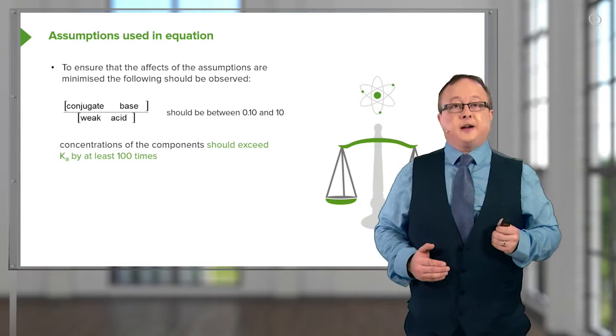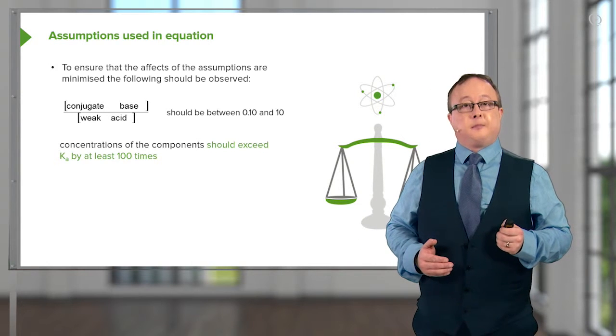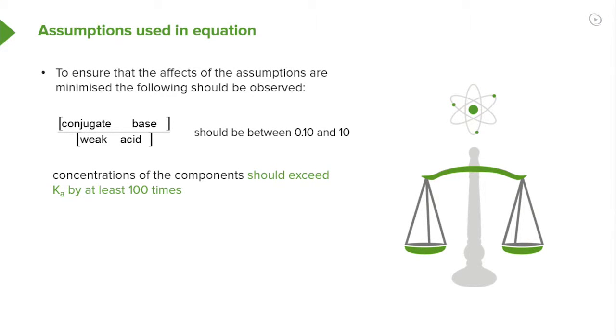To ensure that the effects of this assumption are minimized, the following should be observed. When the concentration of conjugate base is divided by the concentration of the weak acid, the resulting value should be between 0.10 and 10. Again, concentrations of the components should exceed Ka by at least a hundred times.